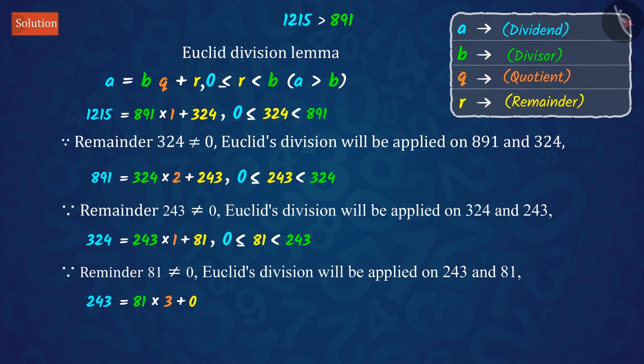The remainder has now become 0, so our procedure stops here. Since the divisor at this stage is 81, which is the HCF of 1215 and 891.